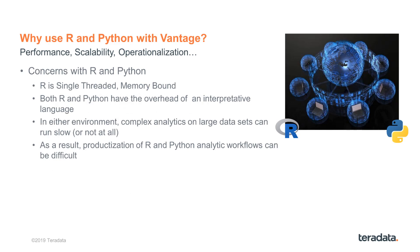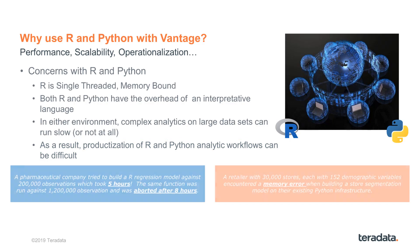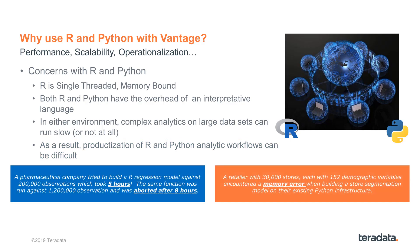The three most important reasons for using R and Python with Vantage are performance, scalability, and operationalization. Although adoption of both languages in the data science community is staggering, they are not without their issues. R is single-threaded and memory-bound. They both have the overhead of being an interpretive language, so complex analytics on large datasets can run very slow or not at all. Teradata has worked with many customers on these concerns.